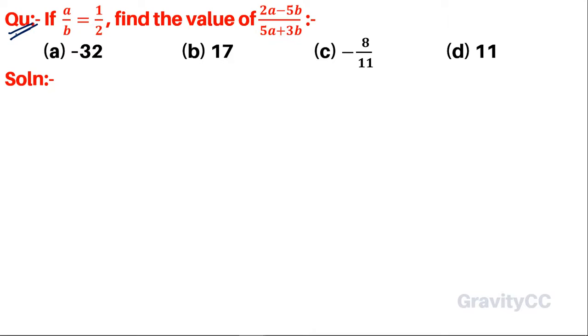Given a/b = 1/2, let a = k and b = 2k. Therefore, (2a - 5b)/(5a + 3b) equals: substitute a = k and b = 2k to get (2k - 5(2k))/(5k + 3(2k)).